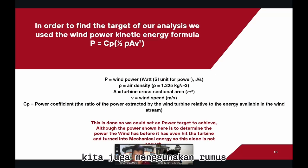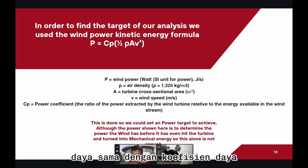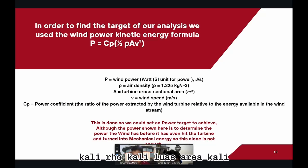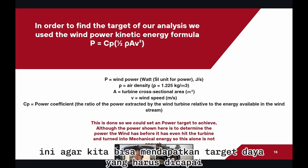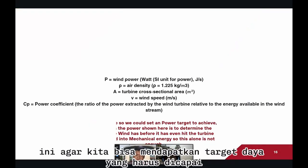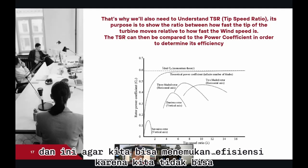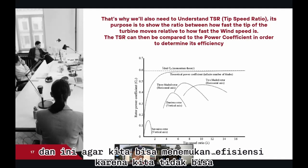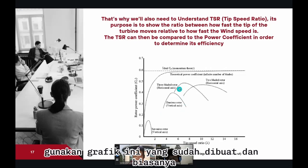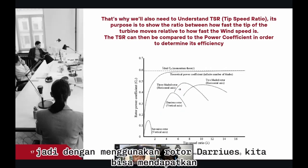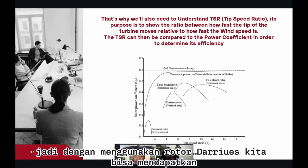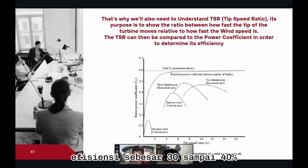We also use the formula: Power equals the power coefficient times rho times area times velocity to the power of three, divided by two. This is so we can get the power target to achieve and find the efficiency. Because if we can't calculate it directly, we instead use a graph that's already been made as a reference. If we're using the Darrieus rotor, we're trying to achieve an efficiency of 30 to 40%.